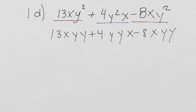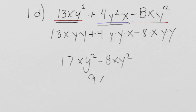So I can start to combine my like terms. I can say 13xy² plus 4xy² is 17xy², minus 8xy² is 9xy².